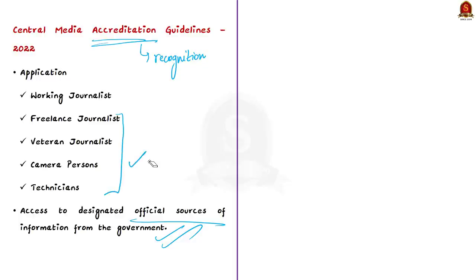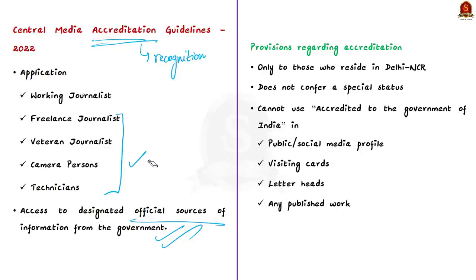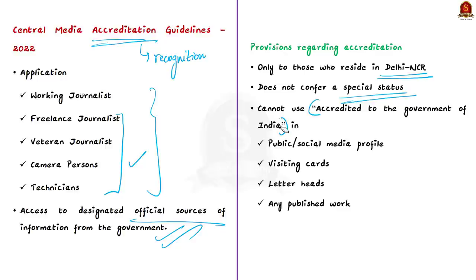Accreditation will be given to persons residing in the Delhi NCR region. It does not confer any official or special status to news media representatives. Therefore, accredited media persons should not use the words 'accredited to the Government of India' on any public or social media profile, visiting cards, letterheads, or any published work.